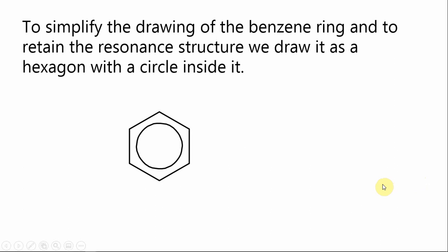To simplify that and to indicate that that is the case, we simplify the structure by drawing a hexagon with a circle inside. This shows us, using a line structure configuration, the configuration for benzene. We're going to go almost exclusively to line structures from here on.